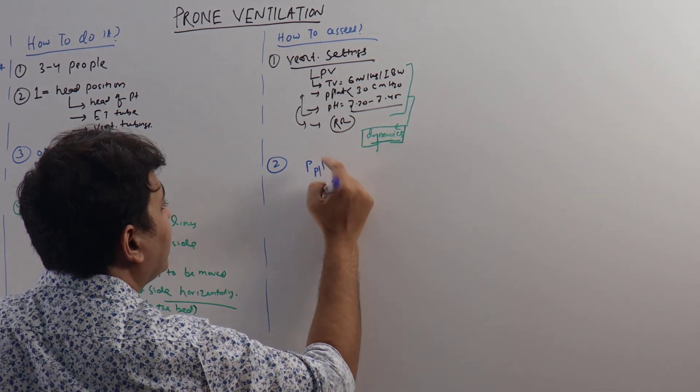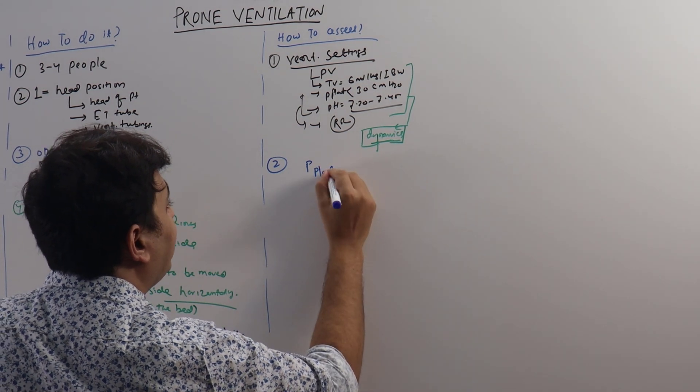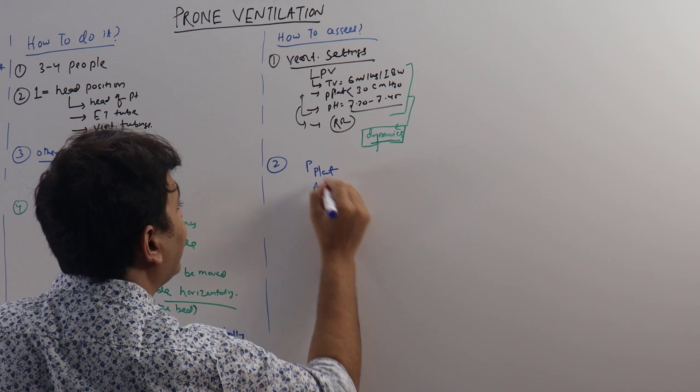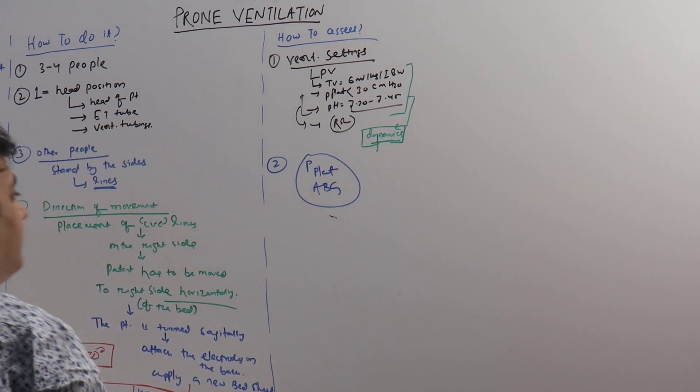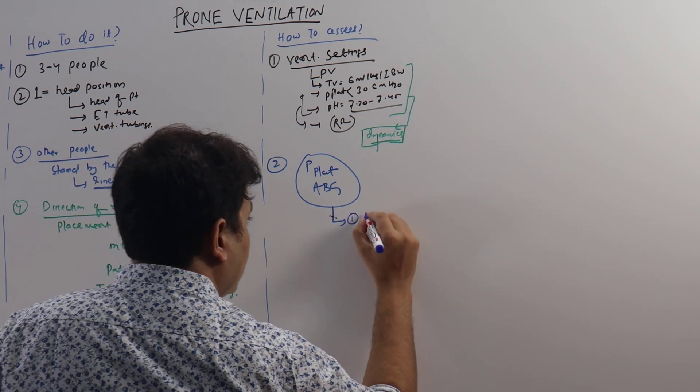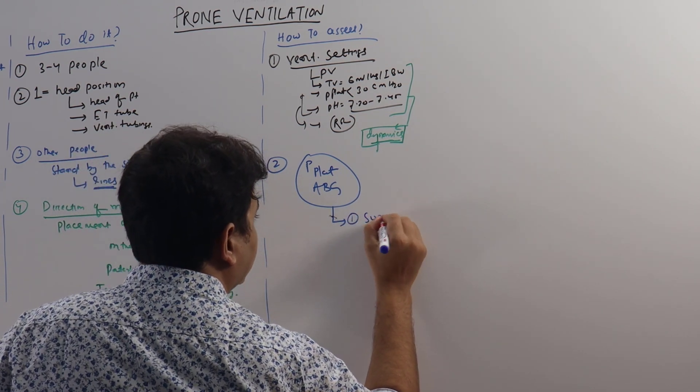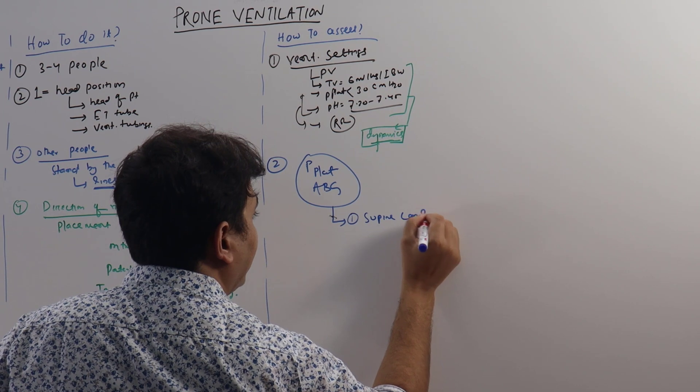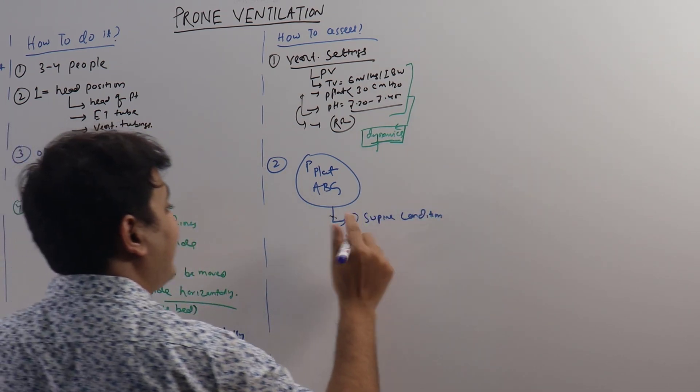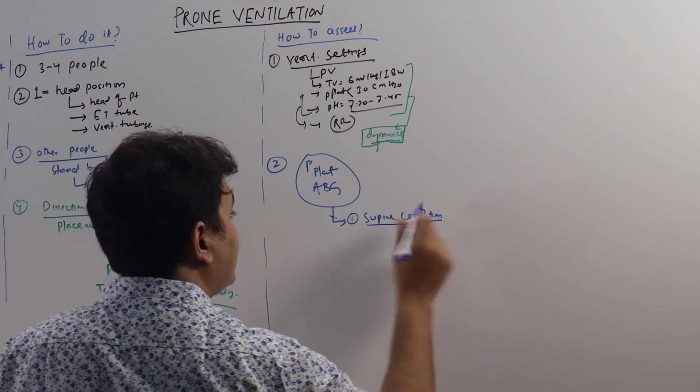Second point: how to assess while patient is proning? We have to assess the P-plateau and ABG. How frequently? First is in supine condition.